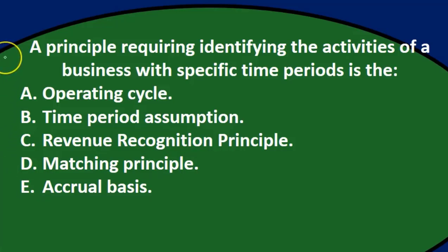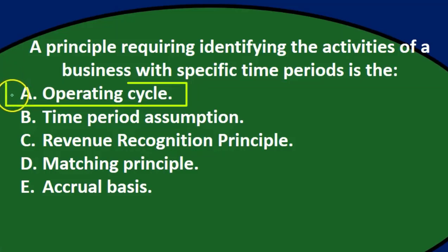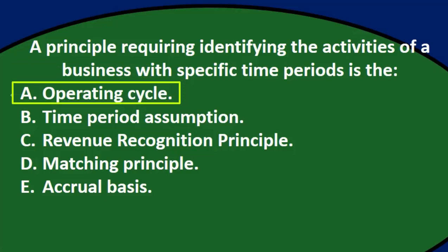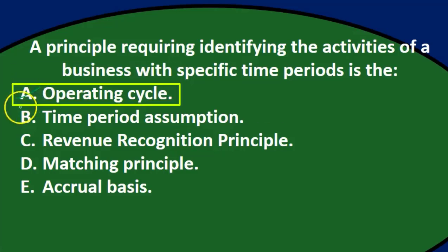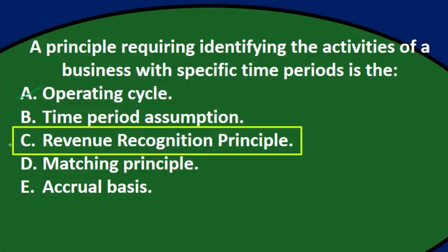Going through these again — the principle requiring identifying the activities of a business with specific time periods. A, operating cycle: we're talking about a time frame, but it's not going to be the operating cycle. B, time period assumption: that assumes we have a time period we're going to be applying to — it sounds pretty good, so we'll keep that.